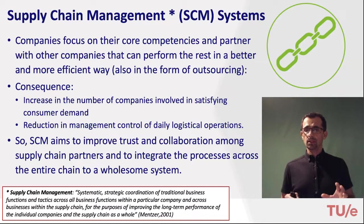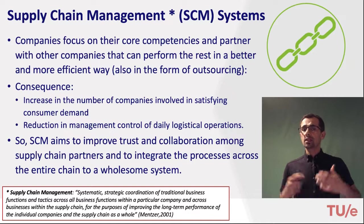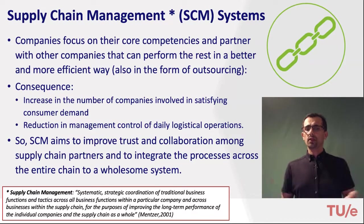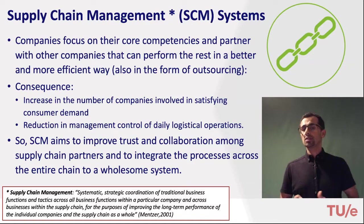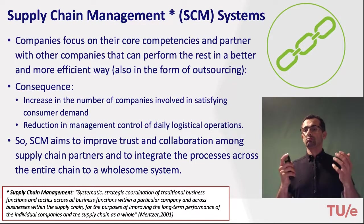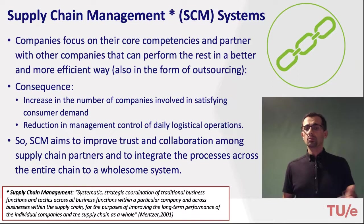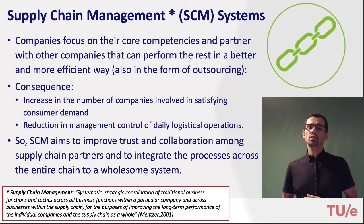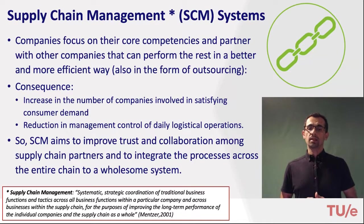This partnership approach has a few consequences: it increases the number of companies involved in satisfying customer demand, and it reduces management control of daily logistic operations. Supply chain management systems aim to improve trust and collaboration among supply chain partners and to integrate processes across the entire chain into a wholesome system, thereby improving supply chain responsiveness and efficiency.